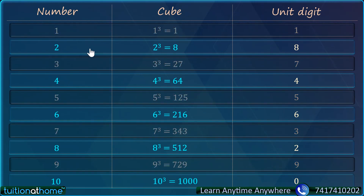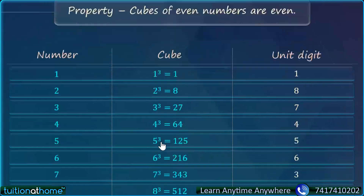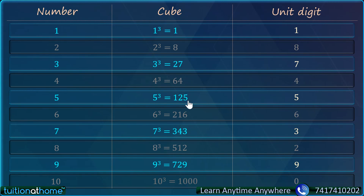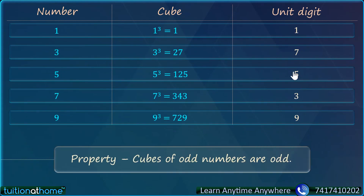Let us see only the even numbers: 2, 4, 6, 8, 10. In that case, the unit digit will be either 8, 4, 6, 2, or 0. So cubes of even numbers are even — if we take an even number like 2, its cube will also be even; if we take 8, its cube will always be even. For odd numbers — 1, 3, 5, 7, 9 — the unit digit is 1, 3, 5, 7, 9 respectively. So cubes of odd numbers are always odd.